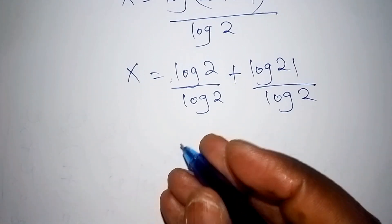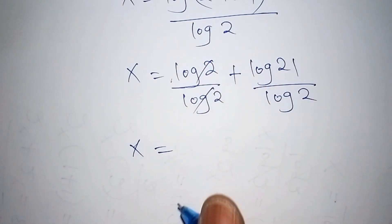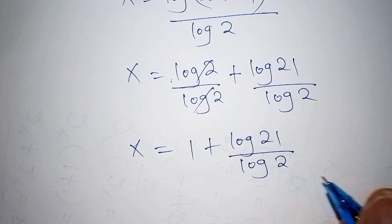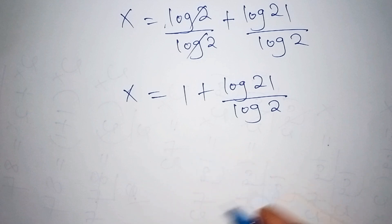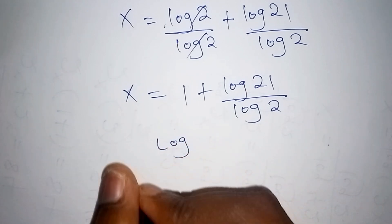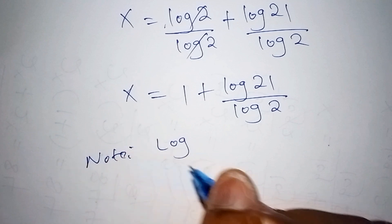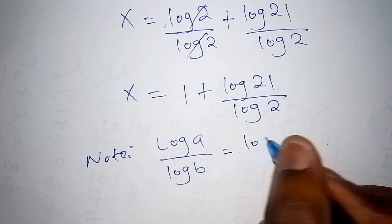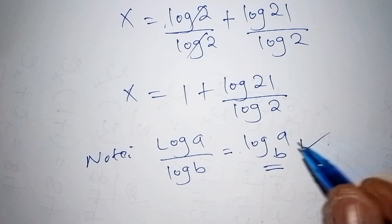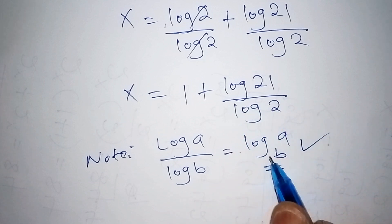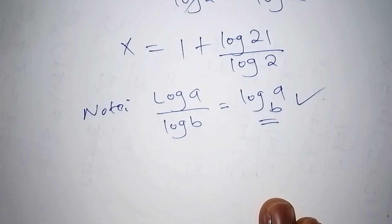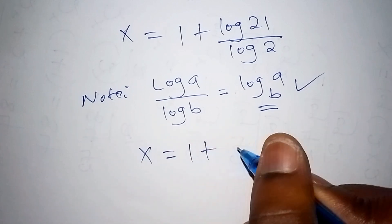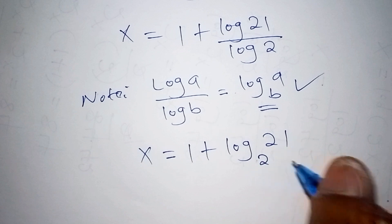The log 2 over log 2 cancels to give 1, so we have x equals 1 plus log 21 over log 2. Using the change of base rule — log A over log B equals log base B of A — this becomes x equals 1 plus log base 2 of 21.